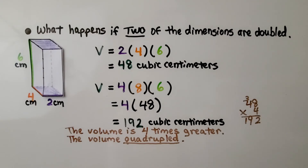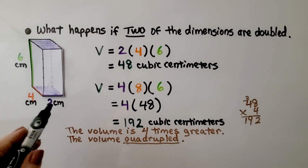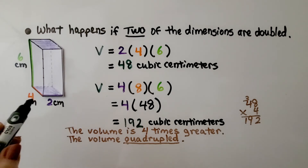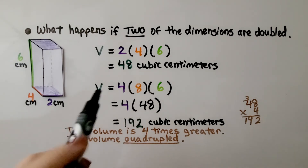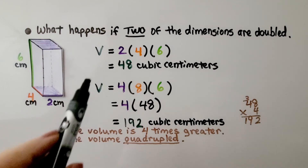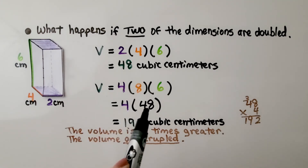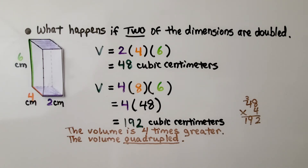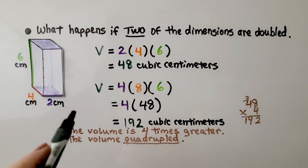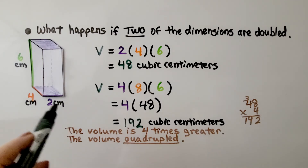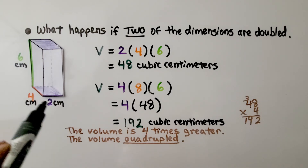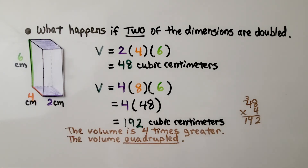Now what happens if 2 of the dimensions are doubled? We're going to double the 2 to a 4 and the 4 to an 8, with the height still being 6. It was 48 cubic centimeters. Now we have 4 times 48, which is 192 cubic centimeters. When 2 of the dimensions are doubled, the volume is 4 times greater — the volume quadrupled. When we only doubled one dimension, the volume doubled; now that we doubled 2 dimensions, the entire volume is 4 times greater.